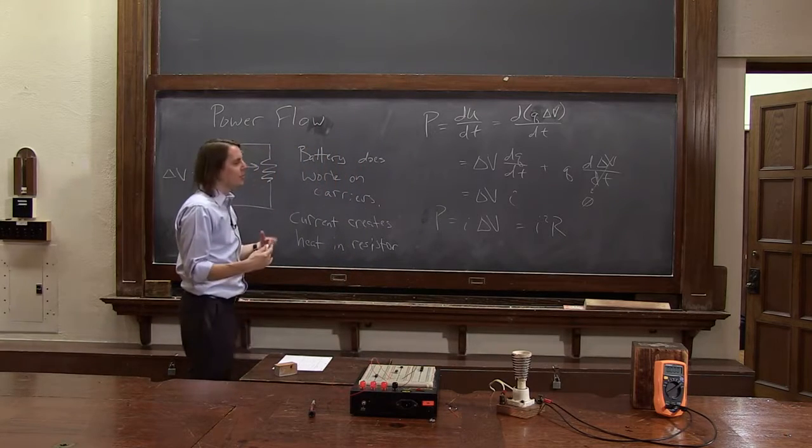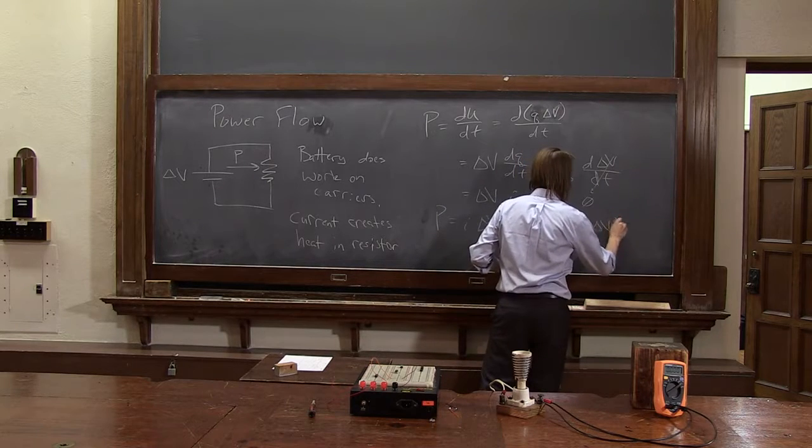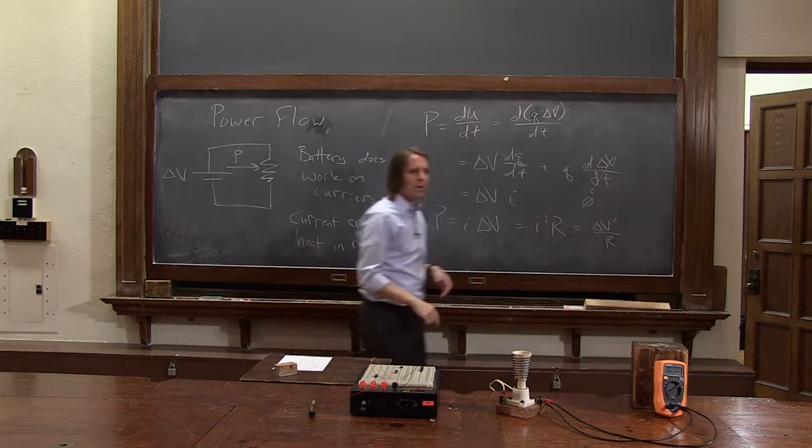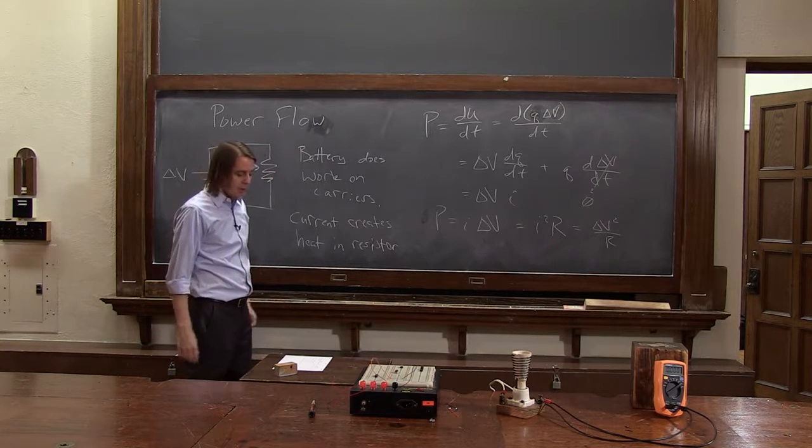Or you can get it in terms of v and r. If you just know the potential and the resistance, you'll get that it's delta v squared over r. Between v, i, and r, there's several ways you can write the expression for power.